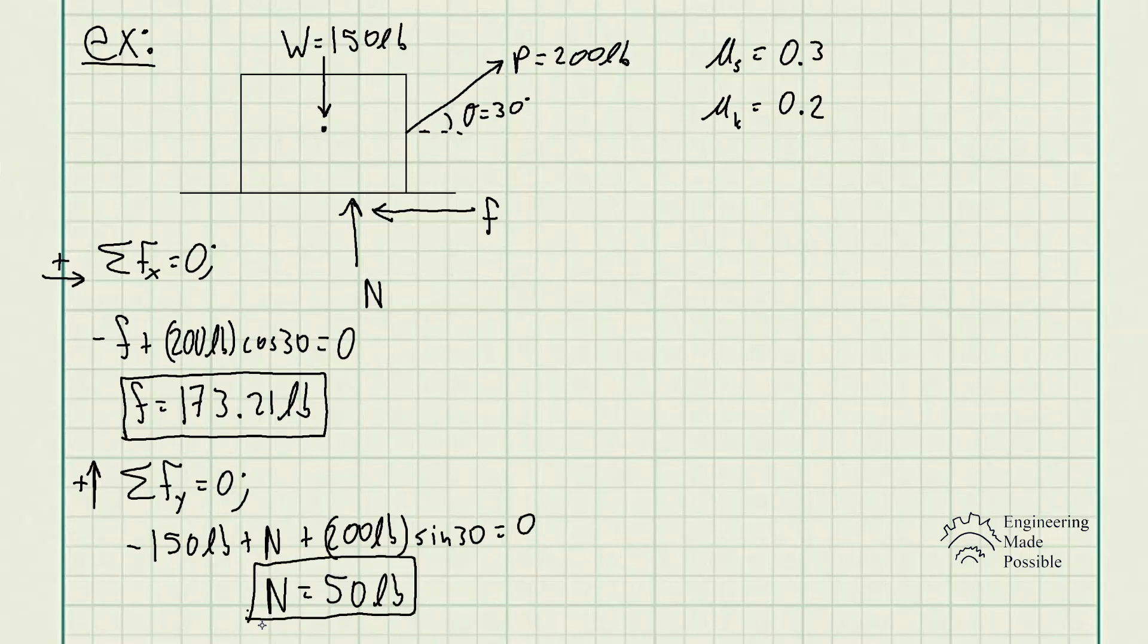Now that we've solved for the unknowns—the normal force and frictional force at the surface—let's check the maximum static frictional force, which is the coefficient of static friction times the normal force. The maximum static frictional force is 15 pounds. We see that our calculated friction is actually above that maximum.